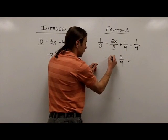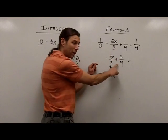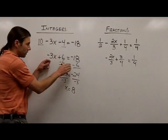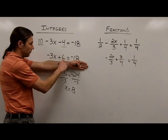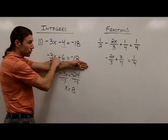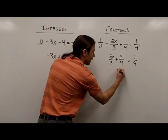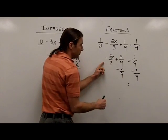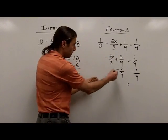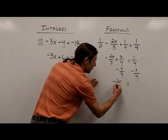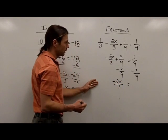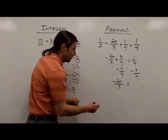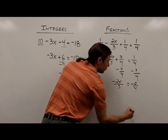So combining those like terms gives 3/4. Bringing down the negative 2x/3, and since that was positive 3/4, I write a plus sign and bring down the 1/4. Now similar to how I subtracted 6 in the integer problem to isolate the variable term, here I subtract 3/4 from both sides. Three fourths minus 3/4 is 0, leaving negative 2x/3 on the left. On the right, 1/4 minus 3/4 gives negative 2/4.